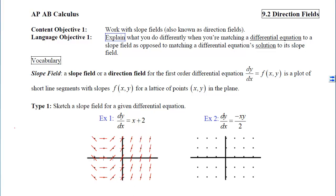Finishing filling it in, we see the completed graph. Moving to Example 2, the process is a little more challenging because the slope now depends on both coordinates of the point, not just x. So if I choose values of x that make the slope 0, we can see that if x equals 0, the slope will be 0 because 0 times anything over 2 gives 0.